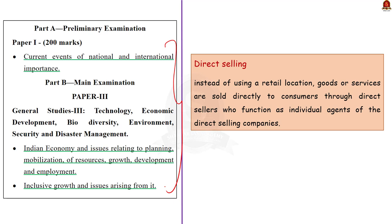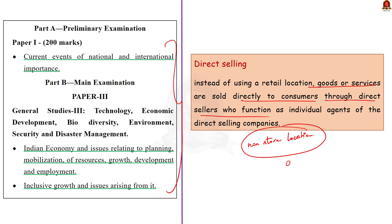What is direct selling? It is the selling of products directly to consumers in a non-retail environment. Instead of sales happening in a departmental store or supermarket, in direct selling, sales occur at home, workplace, online, or other non-store locations. Goods or services are directly sold to consumers through direct sellers who function as individual agents of direct selling companies.